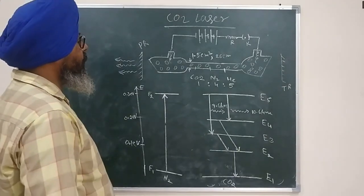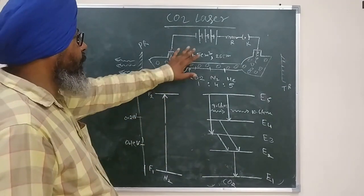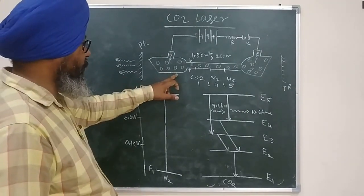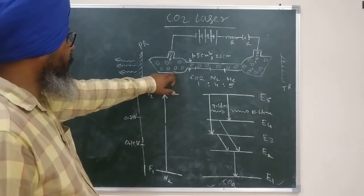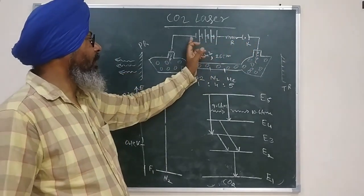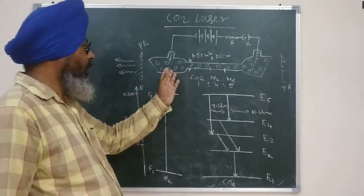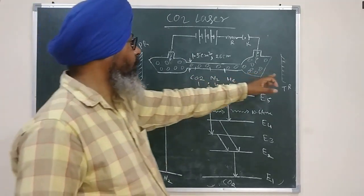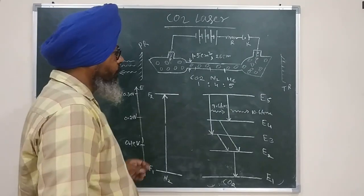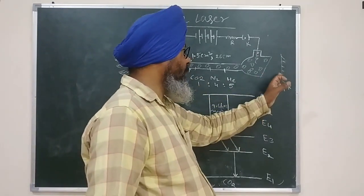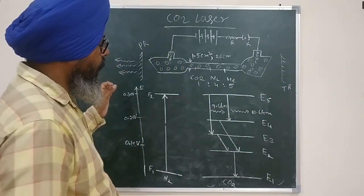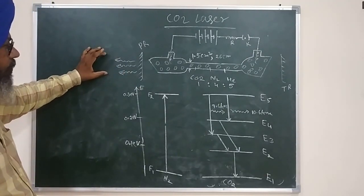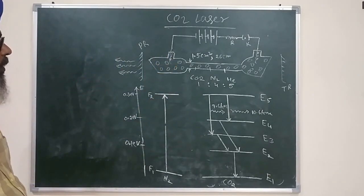The most basic construction of the CO2 laser uses DC direct voltage as the operating voltage. It contains a discharge tube with two electrodes connected to an external DC source through a resistance and a key. There are two mirrors — plane or concave — placed outside the discharge tube. One is totally reflecting and the other is partially reflecting. The laser light comes out of the partially reflecting mirror, parallel to the axis of the discharge tube.